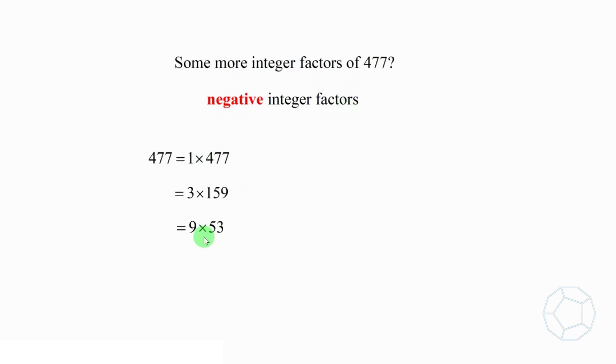Apart from the previous three combinations, we have three more from the negative factors. That is negative 1 times negative 477, negative 3 times negative 159, and negative 9 times negative 53.